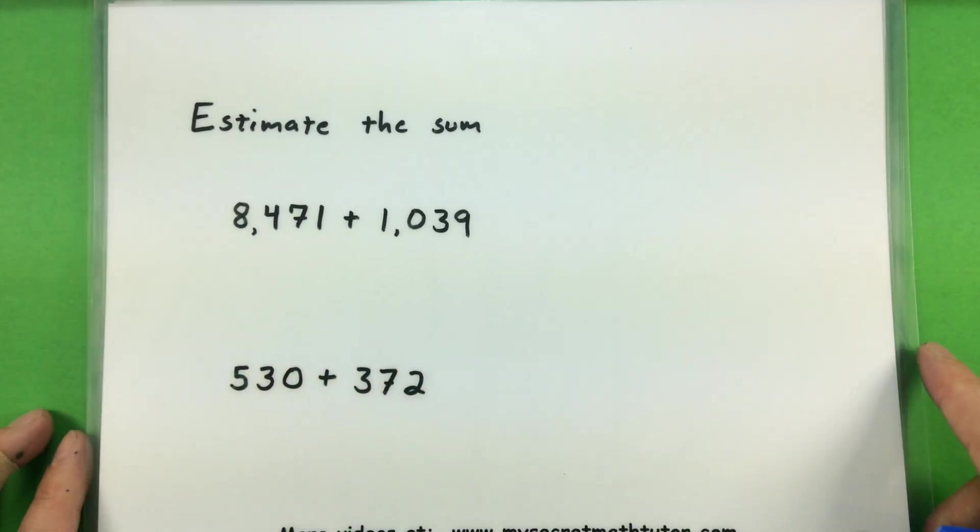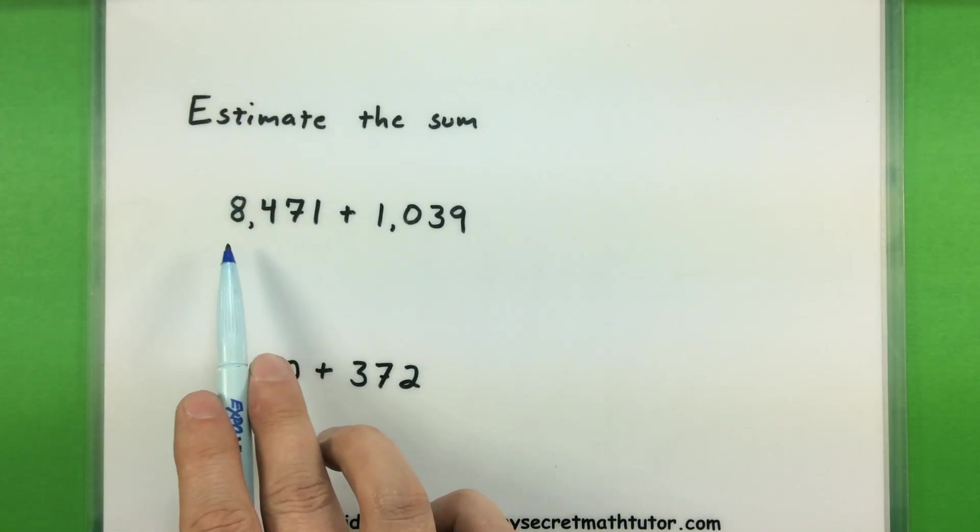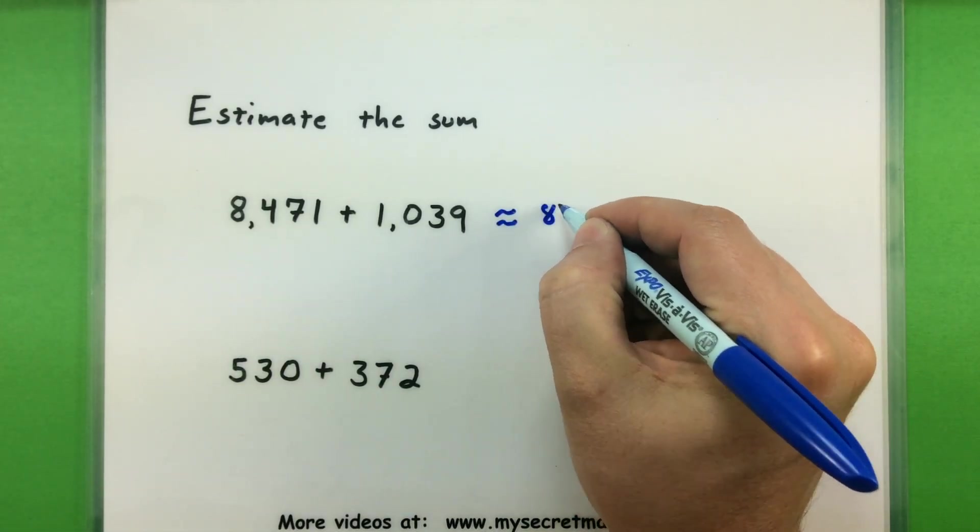Alright, let's try two more examples. That way you have this thing down pat. Alright, now we're estimating the sum of these two. So I'm looking at the eight. The one right next to it is a four. So that would get rounded down to 8,000.